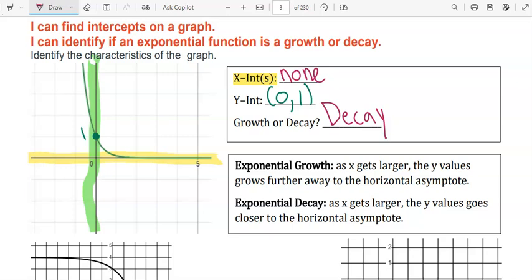As x gets larger, so it goes to the right, the y value goes closer to the horizontal asymptote. The horizontal asymptote is where the graph looks like it's basically a horizontal line. As x gets bigger and bigger here, the y is going to approach 0. It doesn't actually touch it though.